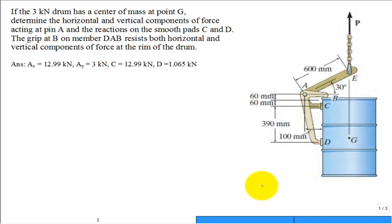All right, so let's solve this problem. We have a three kilonewton drum, so that's the weight of the drum. It could be given in kilograms, but here it is, a kilonewton. It's a little easier.